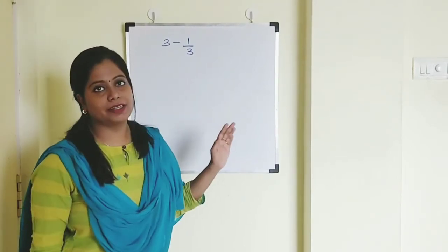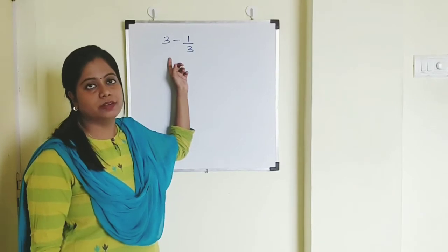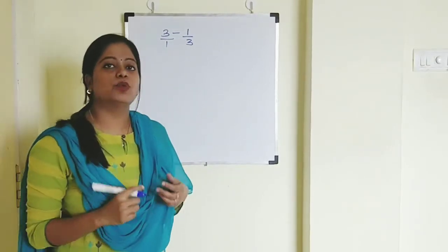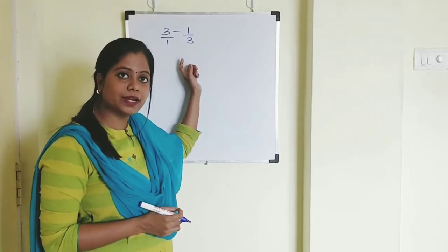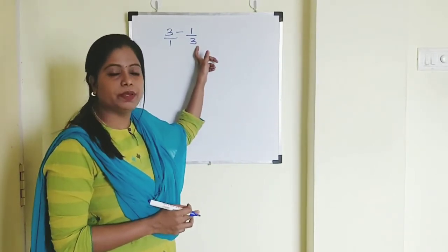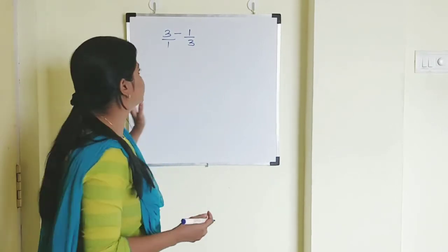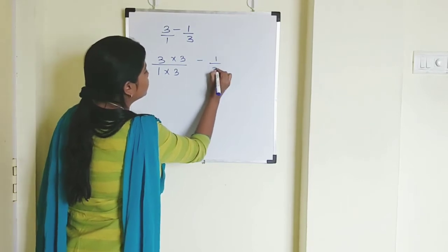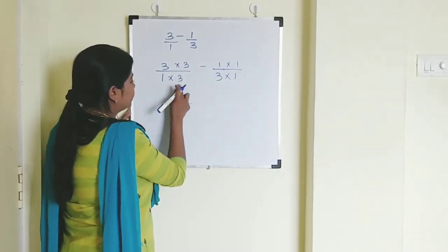Let's do the example: 3 minus 1 by 3. Here 3 is a whole number and 1 by 3 is a fraction. You are going to convert the whole number into a fraction — just put it upon 1. Now the denominators are different, so we take the LCM of 1 and 3. Whenever you get 1 along with any other number, that other number is always the LCM. So the LCM is 3. To make the denominator 1 into 3, multiply by 3, and up also by 3.